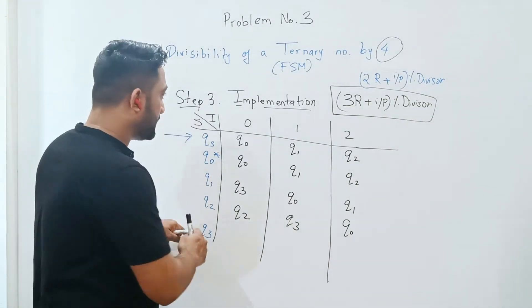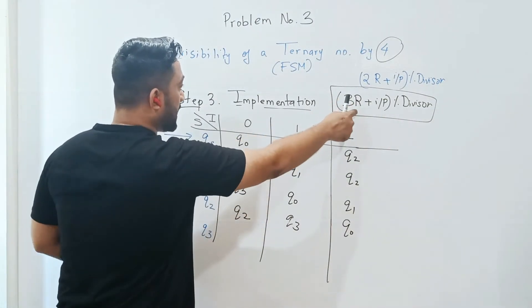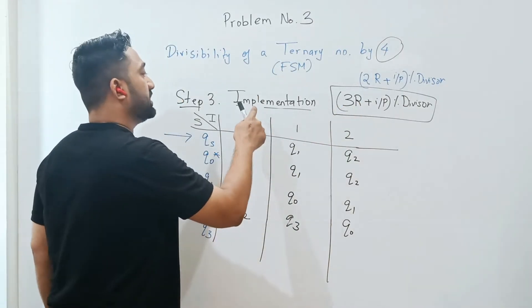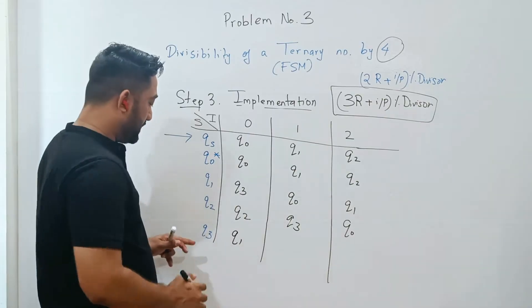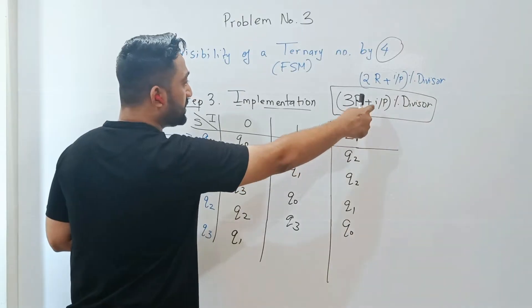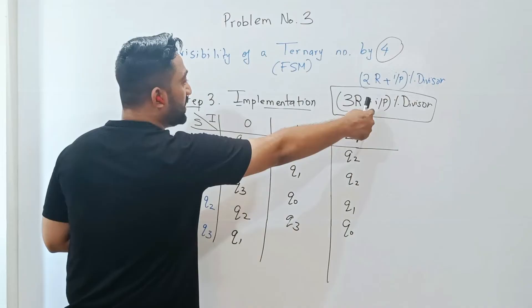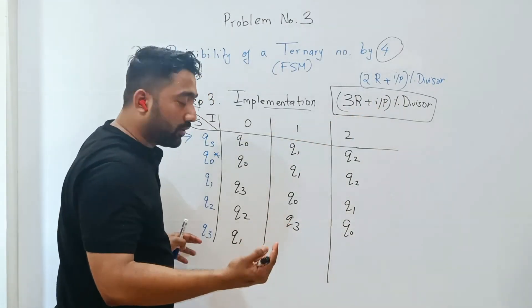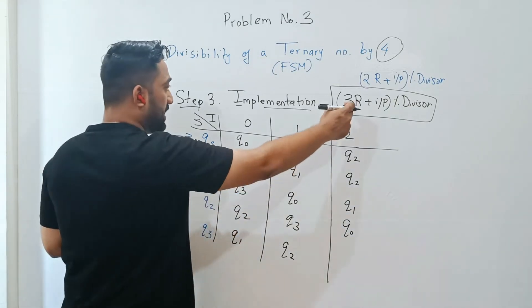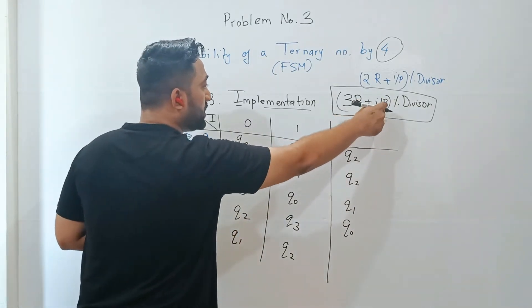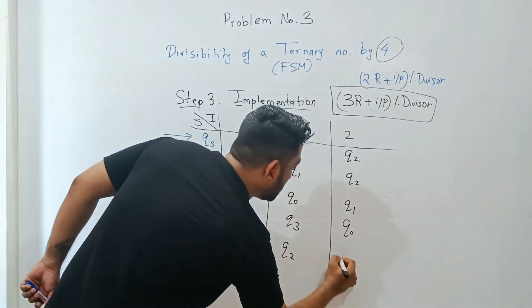Last row, q3: 3 times 3 is 9, 9 plus 0 is 9, 9 mod 4 is 1, so q1. Similarly, 3 times 3 is 9, 9 plus 1 is 10, 10 mod 4 is 2, that's q2. With the same logic, 9 plus 2 is 11, 11 mod 4 is 3, that's q3.